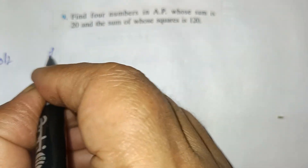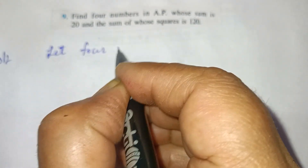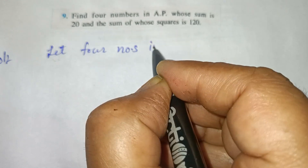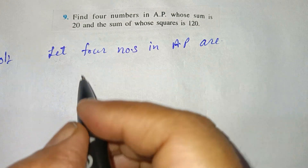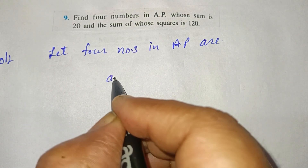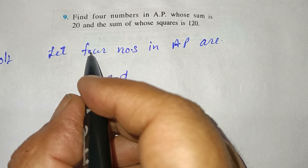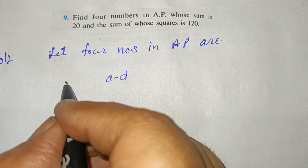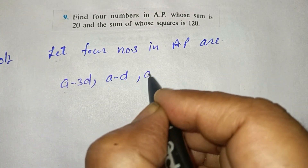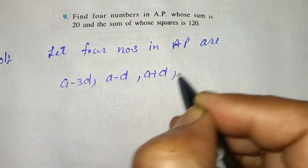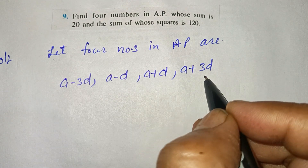Let 4 numbers in AP be taken as: A minus 3D, A minus D, A plus D, A plus 3D. For an even count of terms, we take this form. These are the 4 numbers.